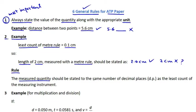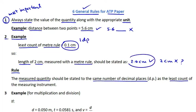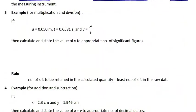The relevant rule here says that the measured quantity should be stated to the same number of decimal places as the least count of the measuring instrument. The least count of the meter rule has one decimal place, so the value of length measured with a meter rule should also be stated to one decimal place, and not to any other number of decimal places.